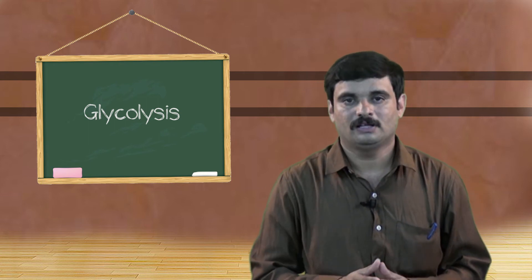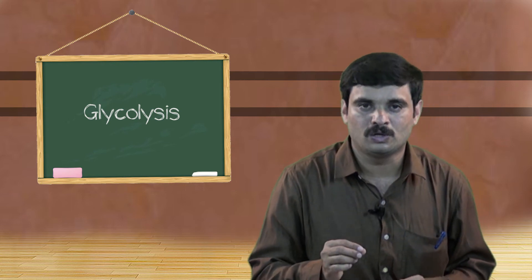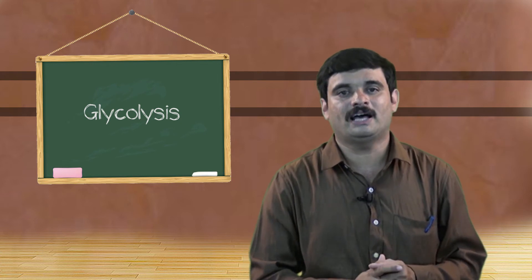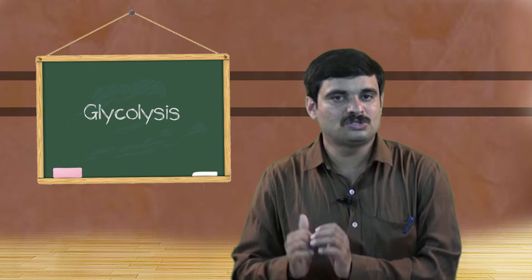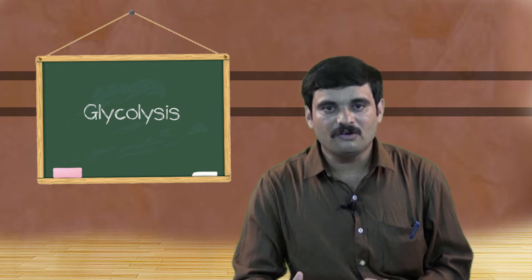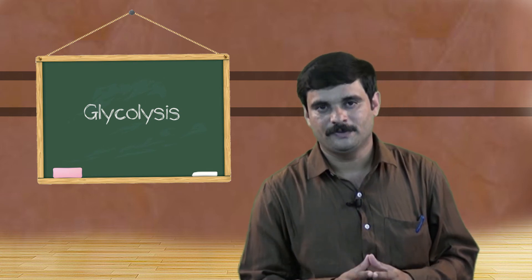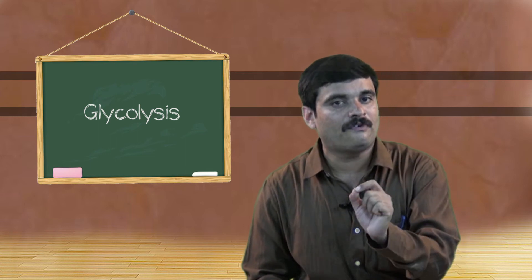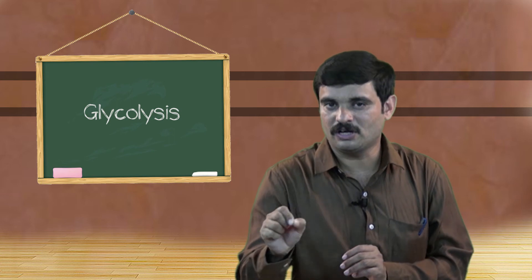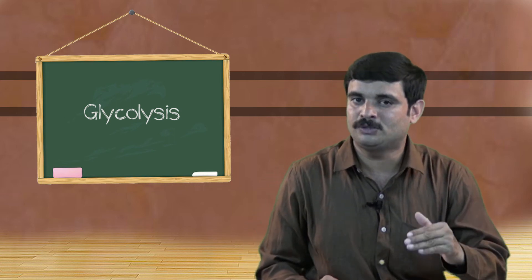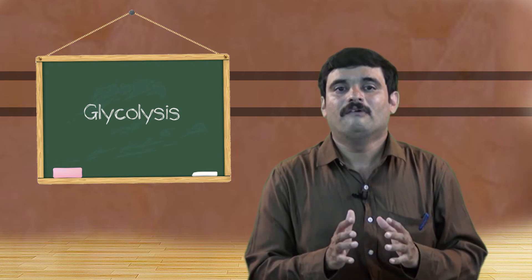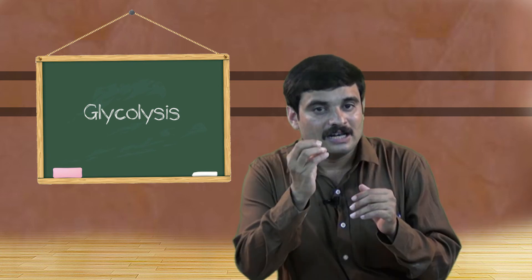In the sixth reaction, dehydrogenation takes place. Nicotinamide adenine dinucleotide, abbreviated as NAD, exists in an oxidized state as NAD⁺ and in a reduced state as NADH. In the sixth step, dehydrogenation occurs along with the addition of inorganic phosphate, converting glyceraldehyde 3-phosphate into 1,3-bisphosphoglyceric acid — the aldehyde component is converted into an acid component.